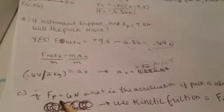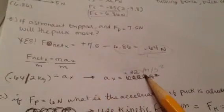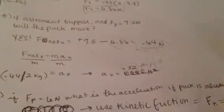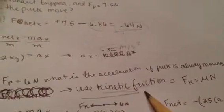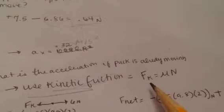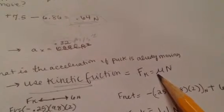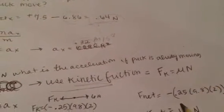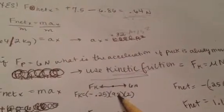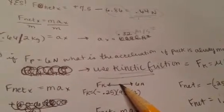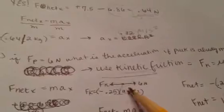Now, if the pushing force is 6 newtons, what is the acceleration if the puck is already moving? The puck is already going 0.32 meters per second and being pushed with a force — since it's already in motion, we're going to use kinetic friction. The force of kinetic friction is the coefficient of kinetic friction times the normal force. We're given the coefficient of kinetic friction as 0.25, and the normal force is 9.8 times 2. Kinetic friction always points in the opposite direction of motion.